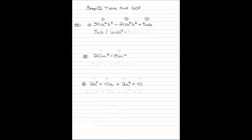You can check yourself by distributing — if you distribute the 5AB back inside the parentheses you should get the original expression back. For the second term you're left with minus 4A squared B, and for the last term, since you took out 5AB, you're left with just one. You can distribute to verify, because taking out a GCF is just undoing the distributive property.